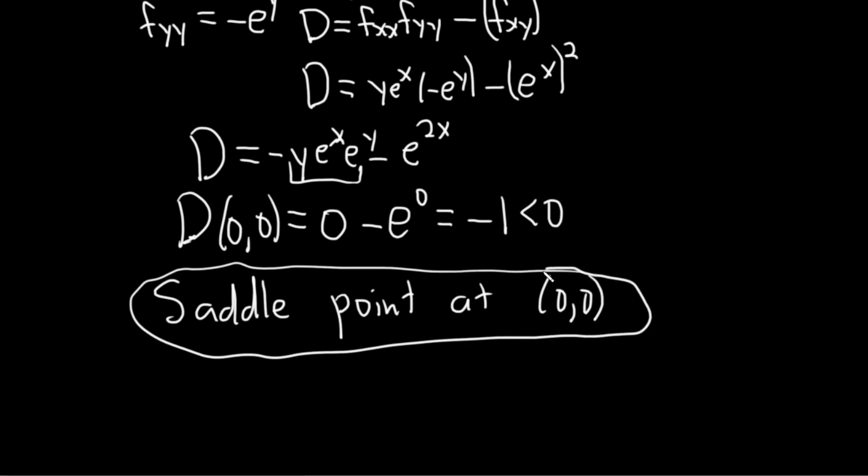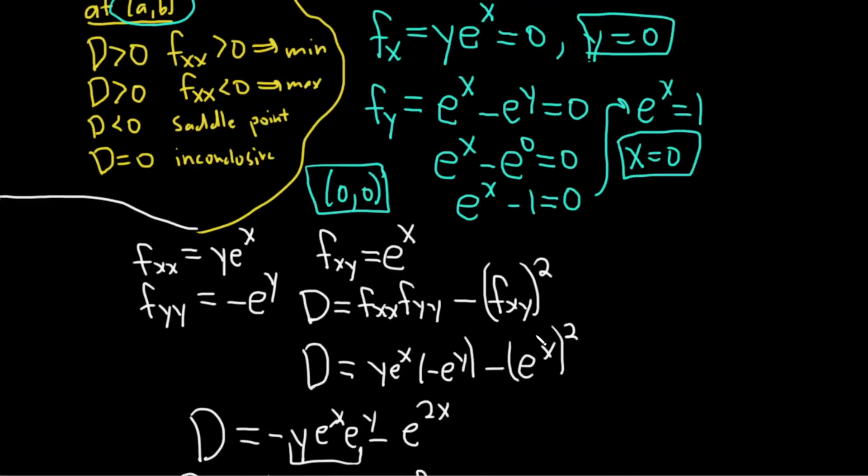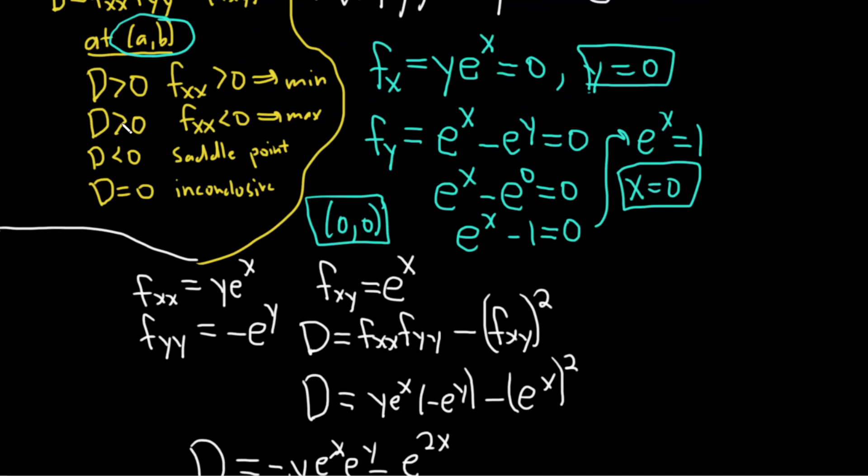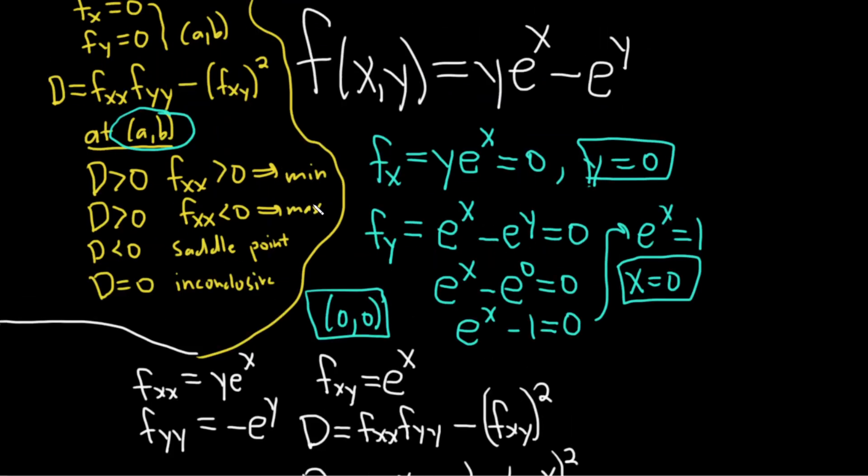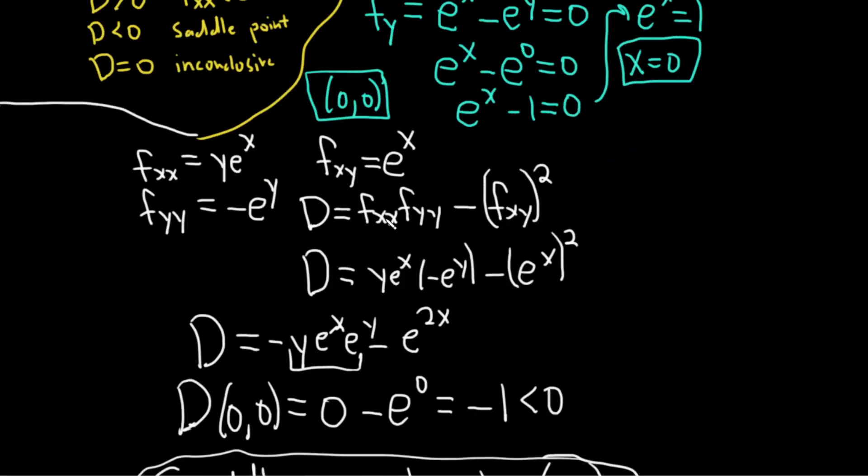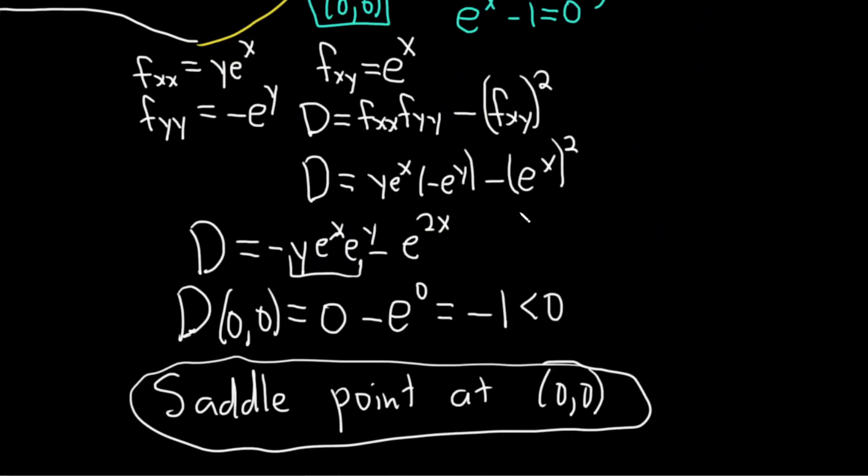Remember, when big D is less than 0, we always have a saddle point. We don't have to worry about checking fxx. It's only when big D is positive that we do the little thing with the min and the max. I hope this video has made a little bit of sense and it's helped you in some way. Good luck.